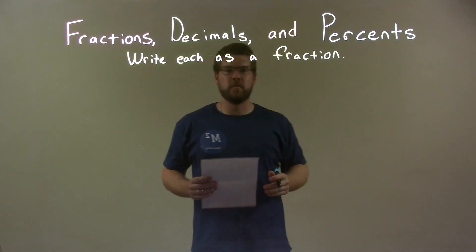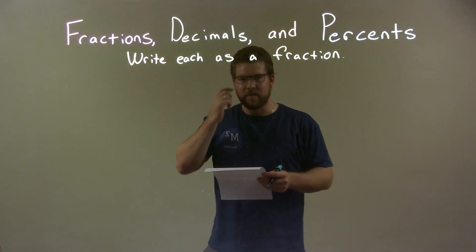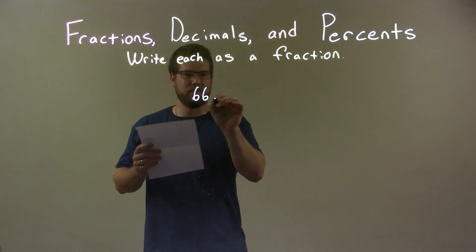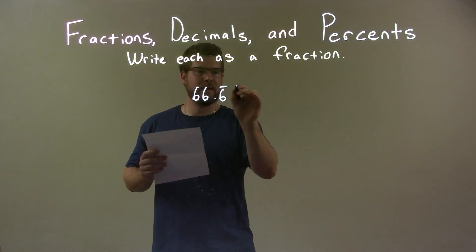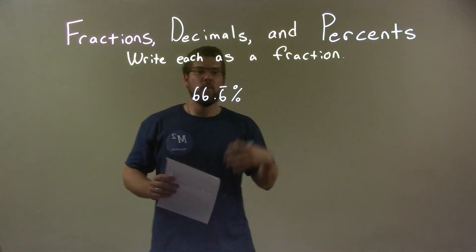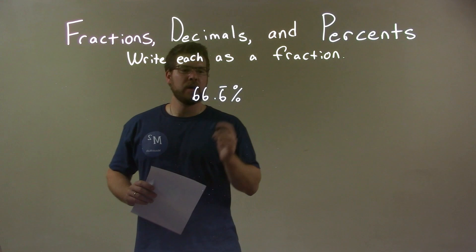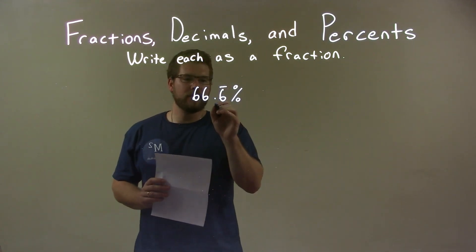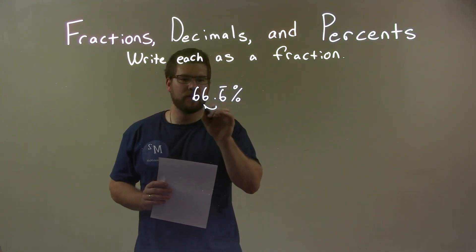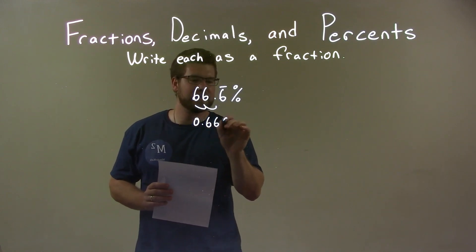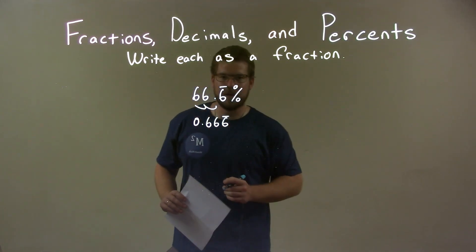We're going to write each as a fraction. So if I was given this percent, 66.6 repeating, well the first thing I'm going to do is convert this to a decimal. I move the decimal place two spots over to the left, and we're left with 0.666 with the 6 repeating.